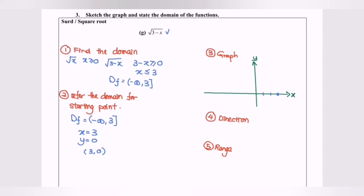Now refer to the direction. Remember, if the coefficient of x is positive, the direction will be towards the right. If the coefficient is negative, then the graph will go towards the left. For this function, square root of 3 minus x, the coefficient of x is negative, so the graph will go towards the left.